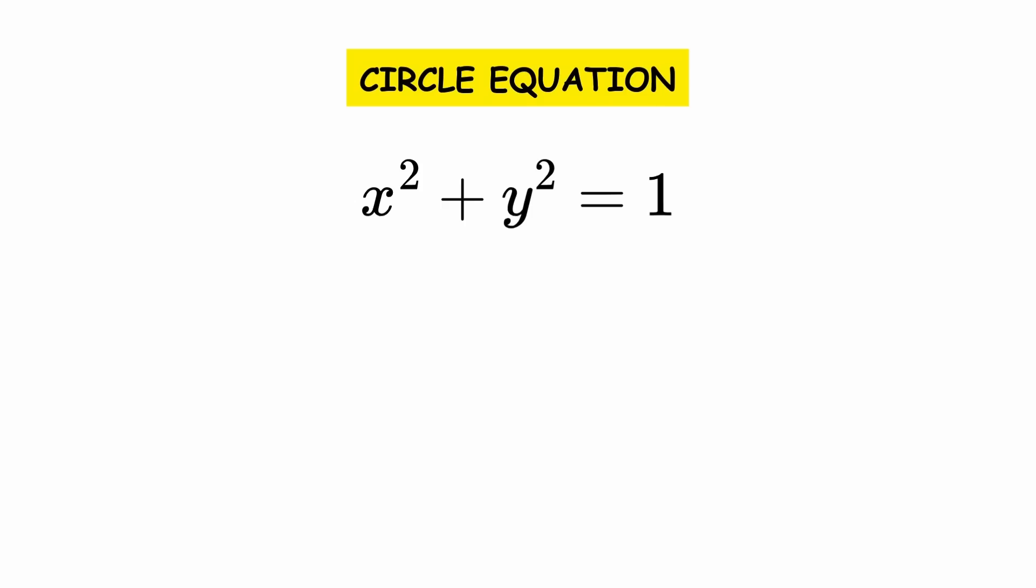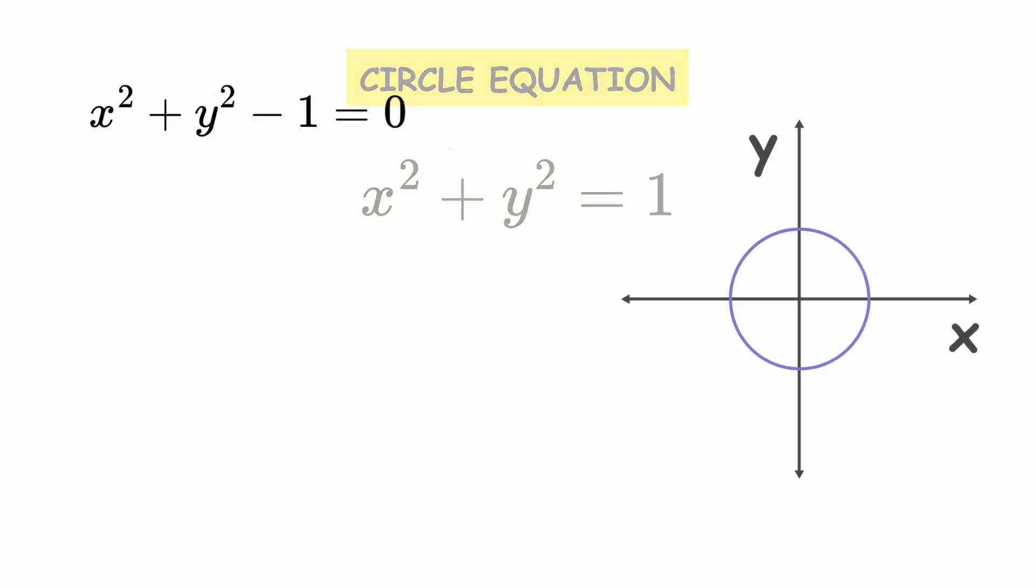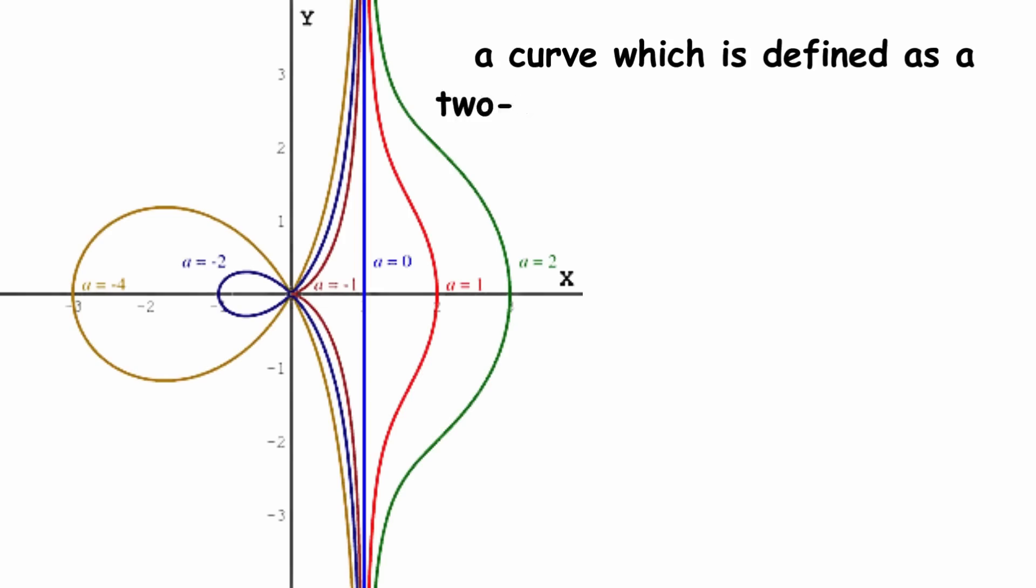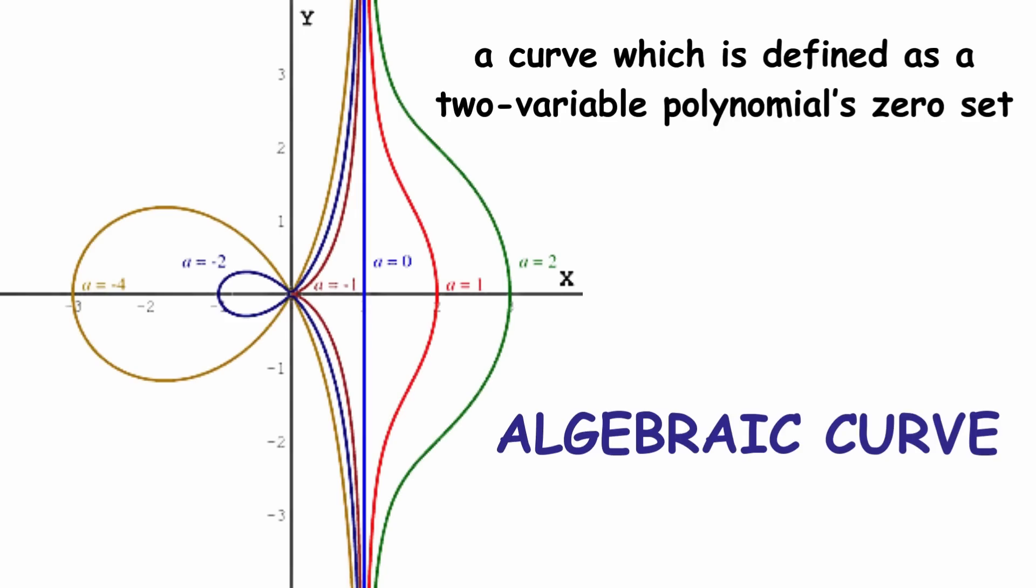As another example, we can rearrange the circle equation to x squared plus y squared minus 1 equals 0. So, the circle consists of the zero set of the polynomial x squared plus y squared minus 1. In general, a curve which is defined as a two-variable polynomial's zero set is called an algebraic curve.